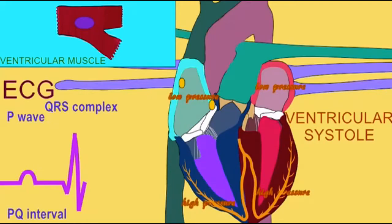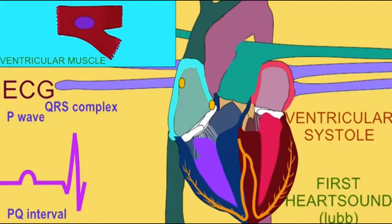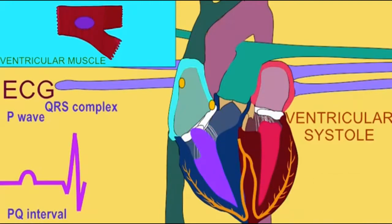And that tricuspid valve, the right AV valve, in the QRS complex, it's going to close to stop you from going that way. You might even start in that direction and then, when you're forced to redirect yourself, swirl around a little bit, helping to contribute to the first heart sound, the lub. But in any case, you won't be going back to the right atrium.